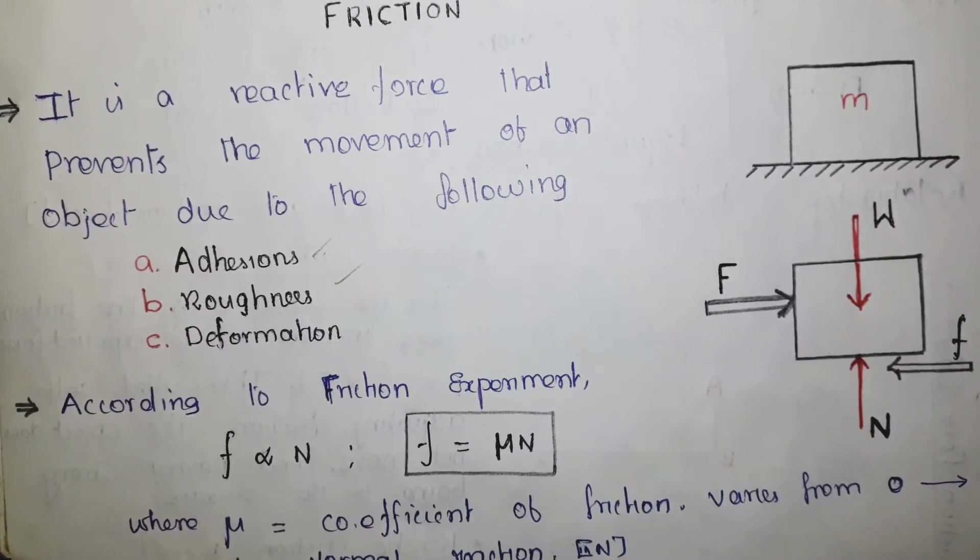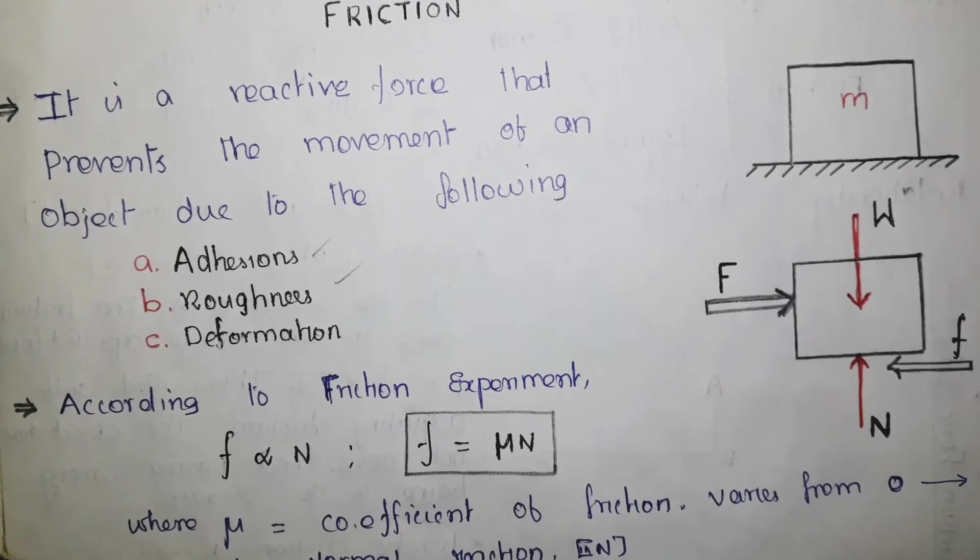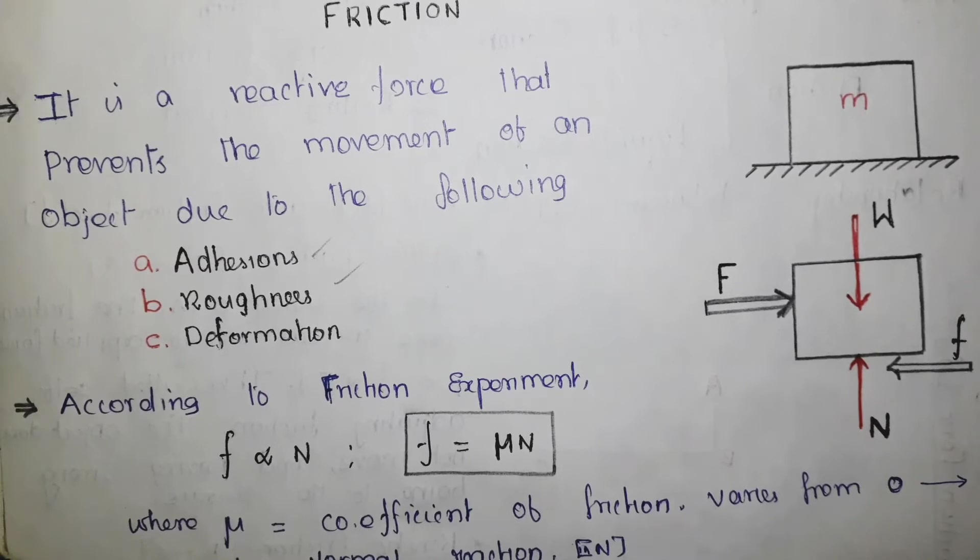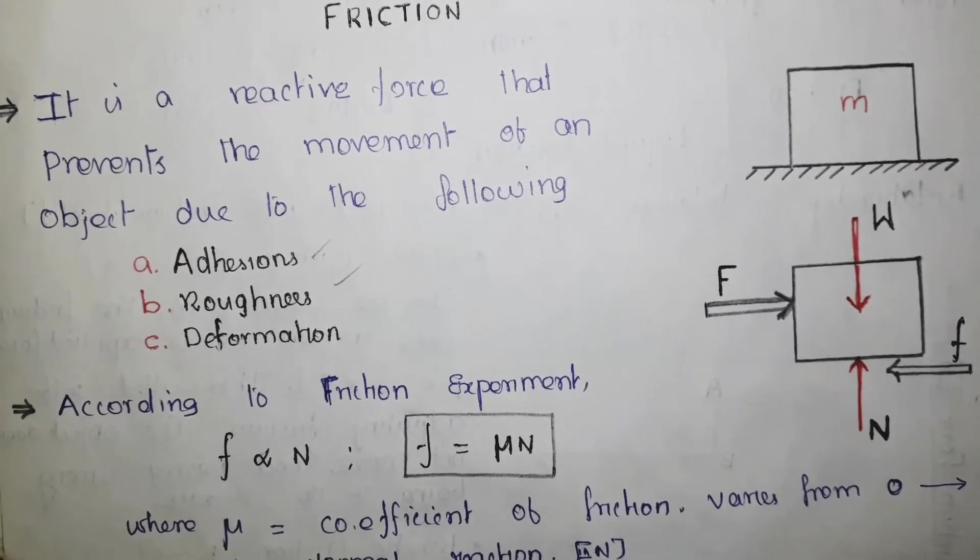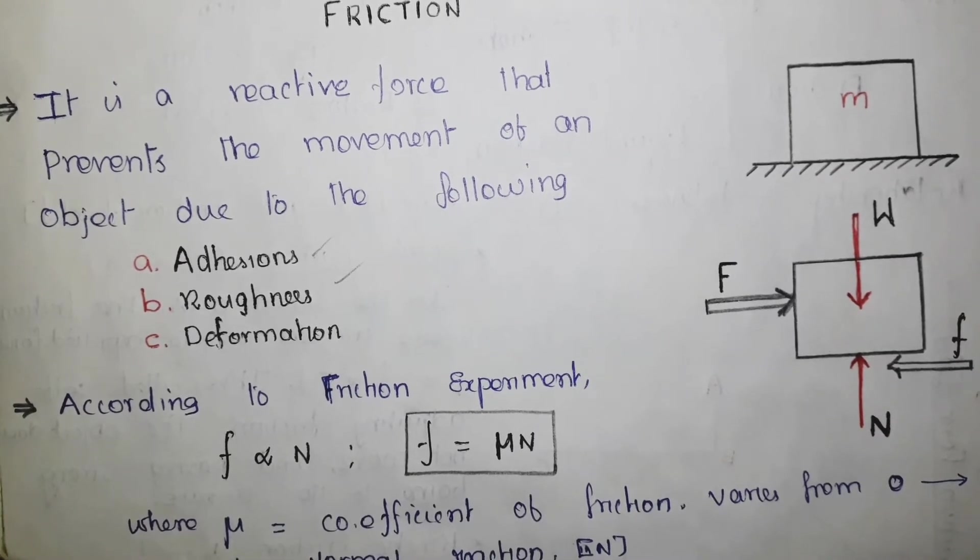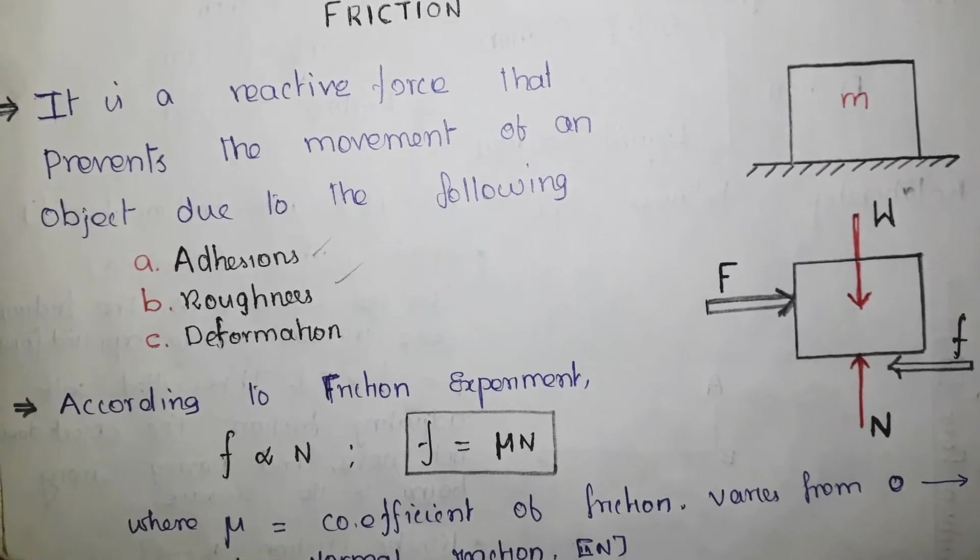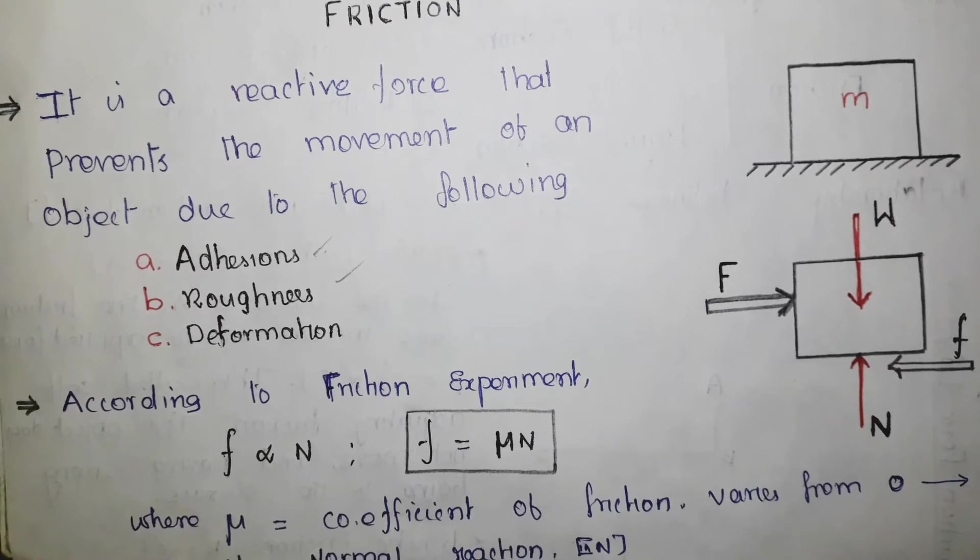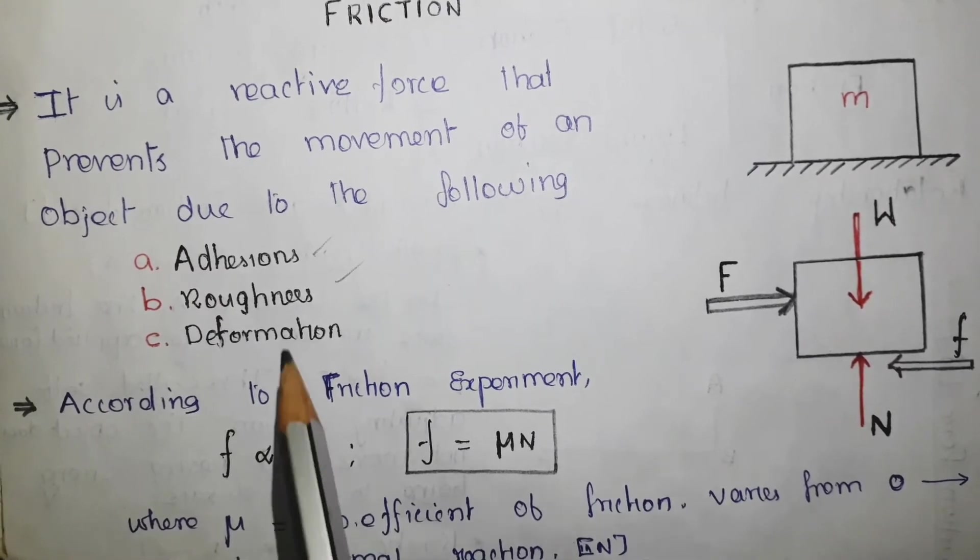Second thing is that it prevents the movement of an object. It actually acts in the opposite direction of the applied force. Third thing is that it is a surface force. It develops at the contact point between two surfaces due to the following reasons.